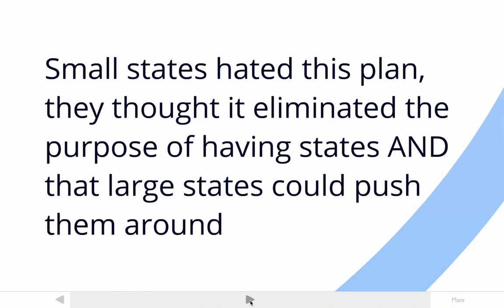Small states feared that if the Virginia Plan were passed, the large states could basically push the small states around. The small states would never be able to get something that they needed passed through Congress. And as you learned, the states are also very different, which makes this a big concern.